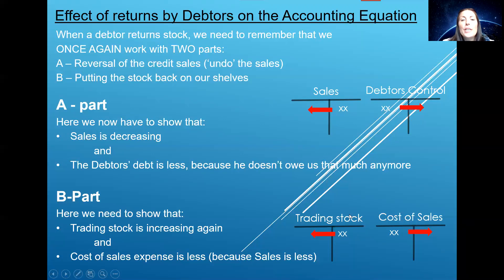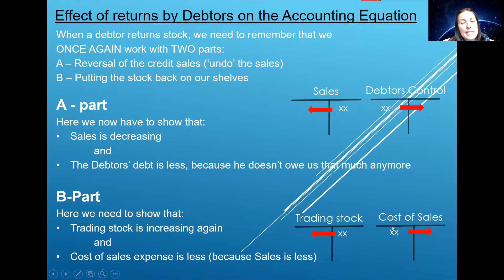In the B part, originally when we sold some of the trading stock to the debtor — and obviously in return he now owes us the money — we wrote on the credit side of trading stock because our trading stock asset decreased. If the debtor now brings stock back, we're going to re-enter that stock onto our shelves and therefore we'll have to write on the debit side. With cost of sales, what happened originally: cost of sales is an expense, so when that transaction took place, we needed to indicate what the expense part of the sales transaction was — what did it cost me originally to buy that stock that we're now selling? So that decreased the owner's equity.